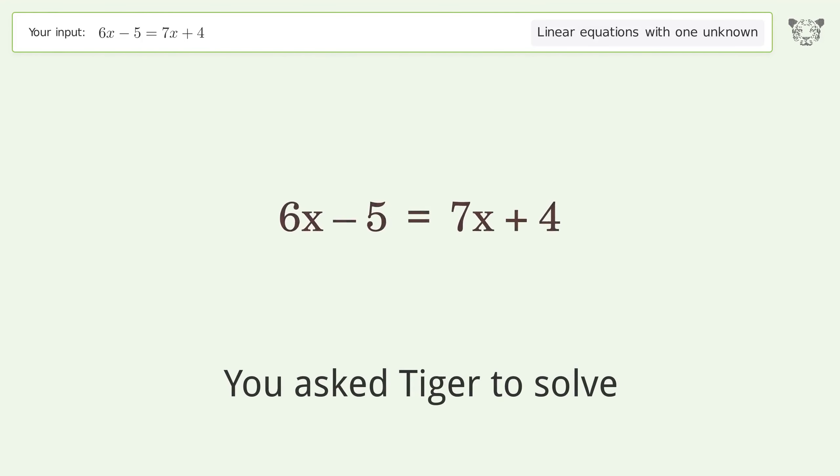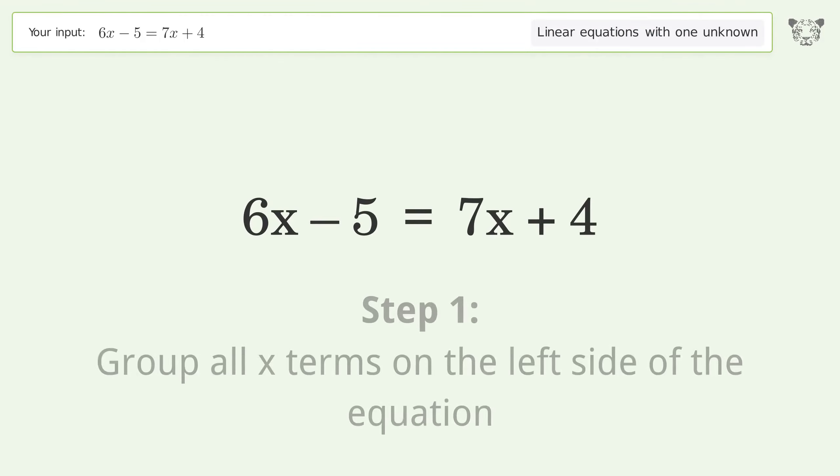You ask Tiger to solve this. This deals with linear equations with one unknown. The final result is x equals negative 9. Let's solve it step by step. Group all x terms on the left side of the equation.